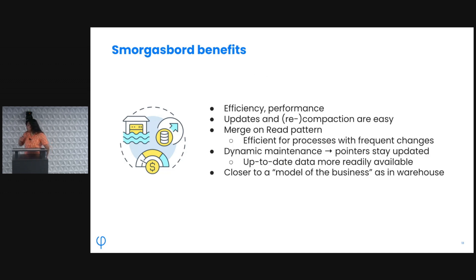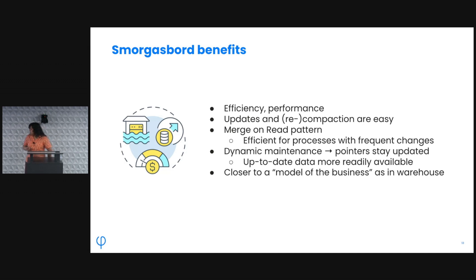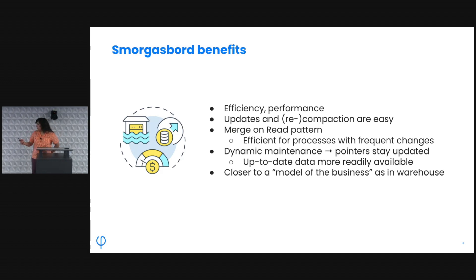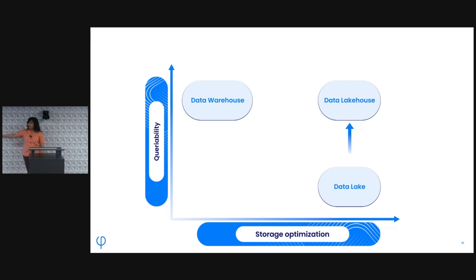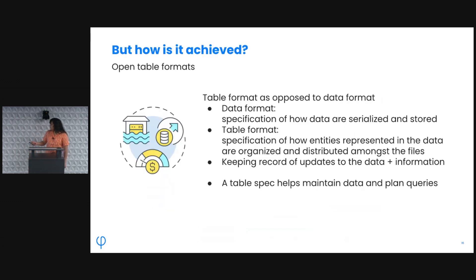With that combination you get some significant benefits: efficiency, performance, easy updates, easy compaction, patterns like merge-on-read, and dynamic table maintenance. You can get back closer to the business model as in the warehouse. By adding a metadata management and maintenance layer to the data lake components, you arrive at the data lakehouse — which is both high in queryability and storage-optimized.